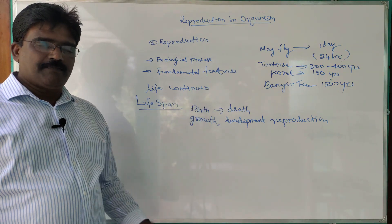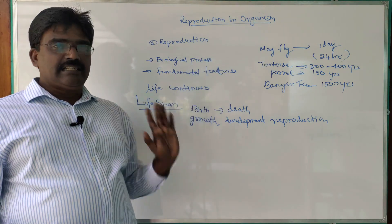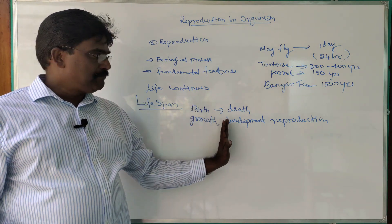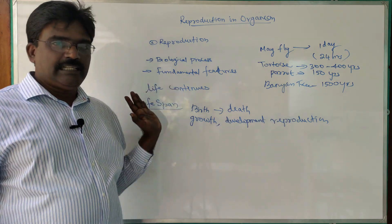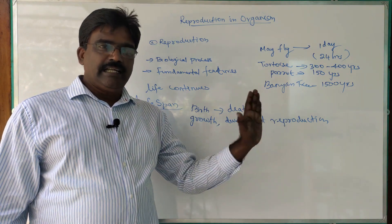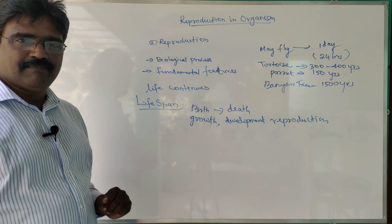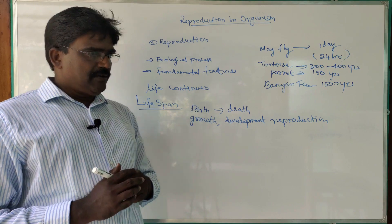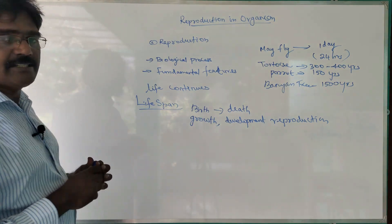Various animals possess different life spans. In all these life spans they come across growth, development, and reproduction. Finally, death of the organism occurs. Because of reproduction, their life is extended in this world; otherwise the species will become extinct. Now we are going to study about some basic features of reproduction.